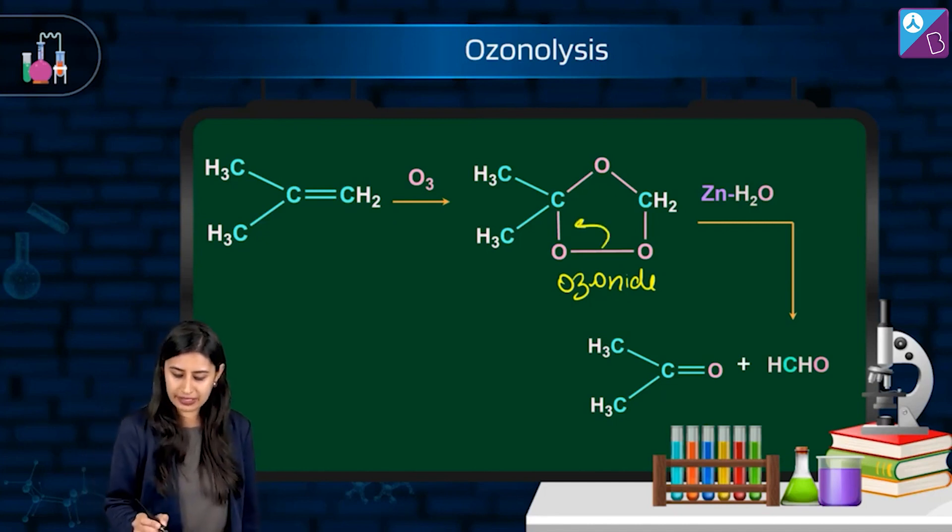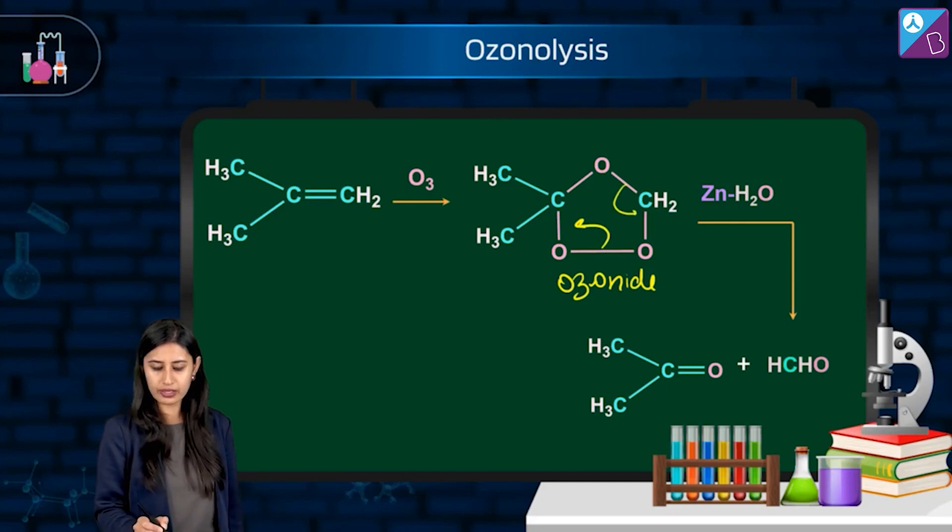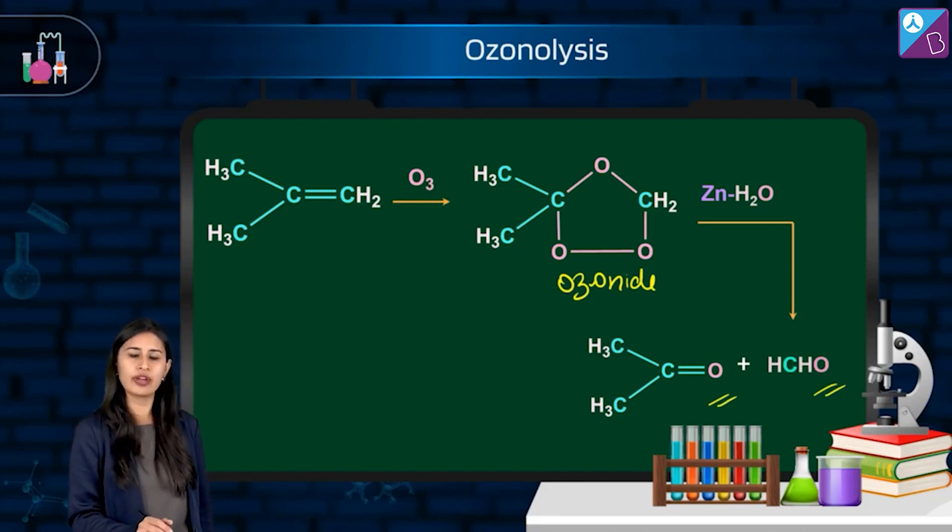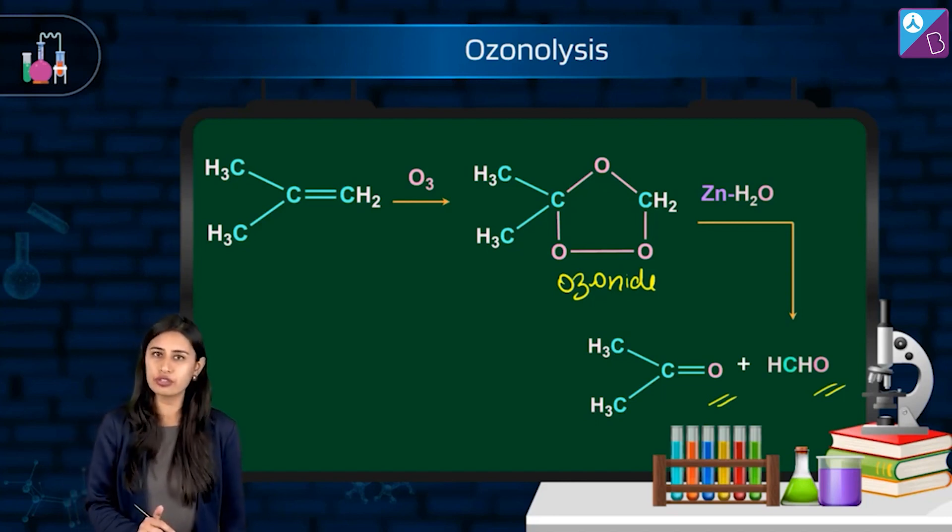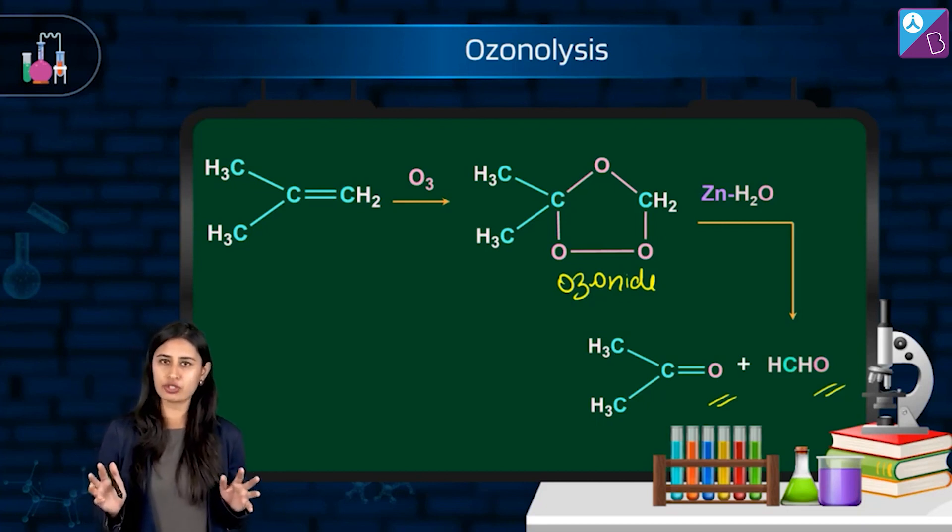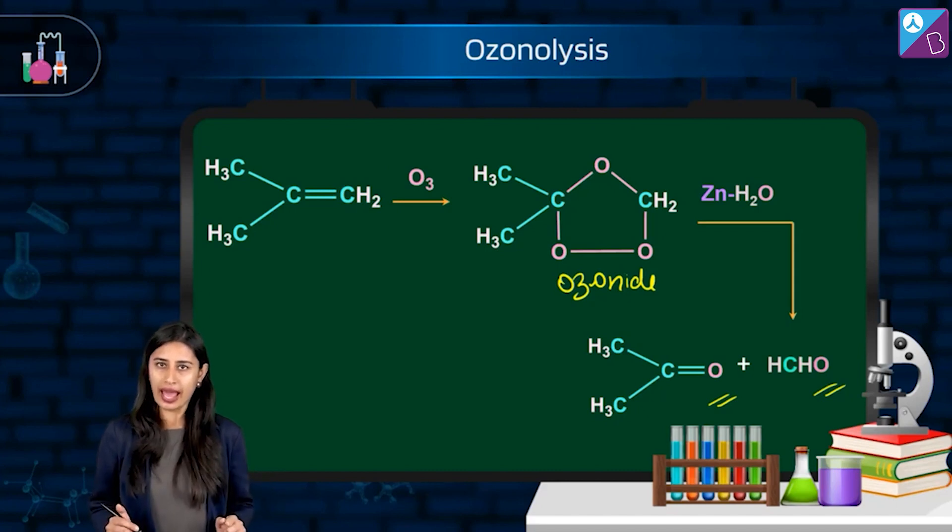Finally, what's happening is you are getting this acetone and you are getting this HCHO, right? So the products is very simple. I'll give you a trick to remember the products. Understanding should be very much crystal clear that the reaction is passing via ozonide formation. And then there are fragments of the oxidized products that you are getting. Check out the trick to remember.